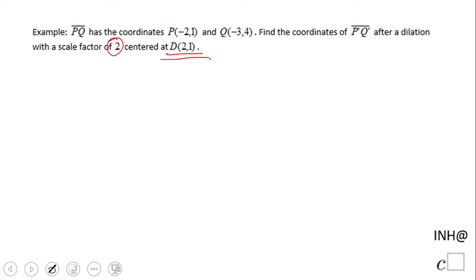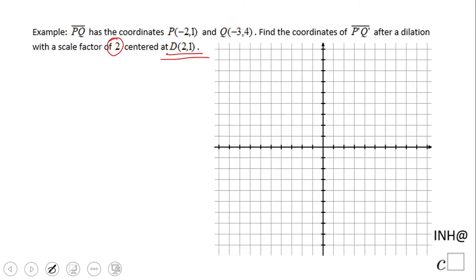I'm going to need some graph paper here. Let's start by plotting the center of dilation, which is at (2,1). This is point D. Now let's plot the first point P at (-2,1). It's right here.